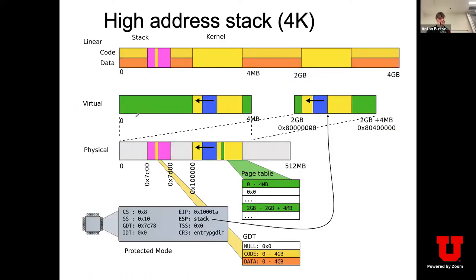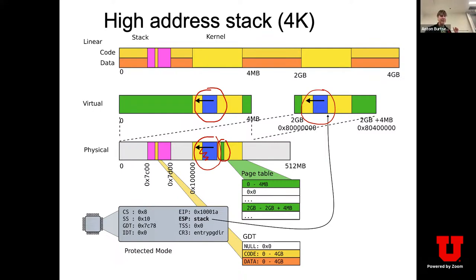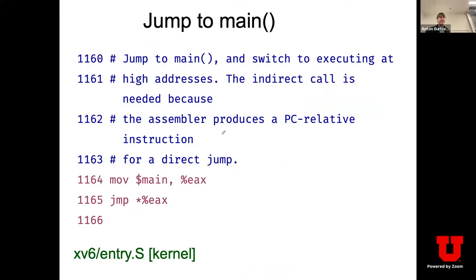This is our system now. The new update is we have the kernel stack. The page table sits in the data section, and the kernel stack variable sits somewhere next to it. Of course the same physical memory is mapped twice: once at lower addresses and once at higher addresses. At this point I have a stack, so let's jump to main.